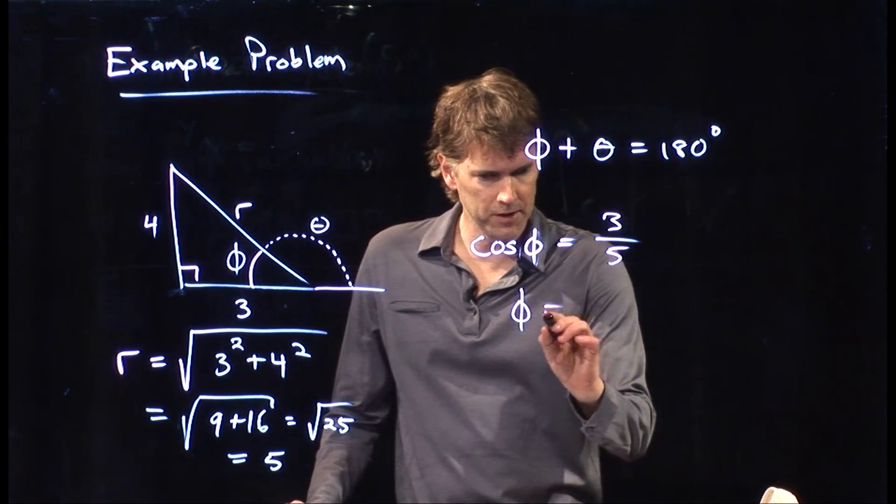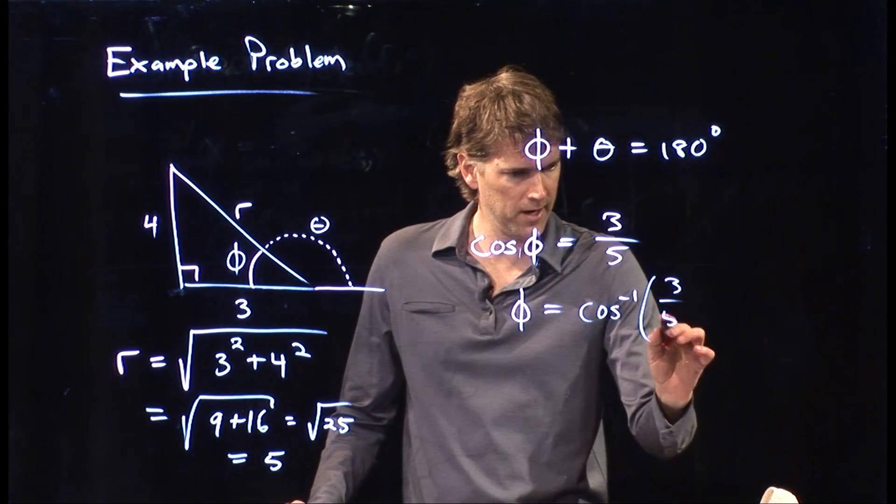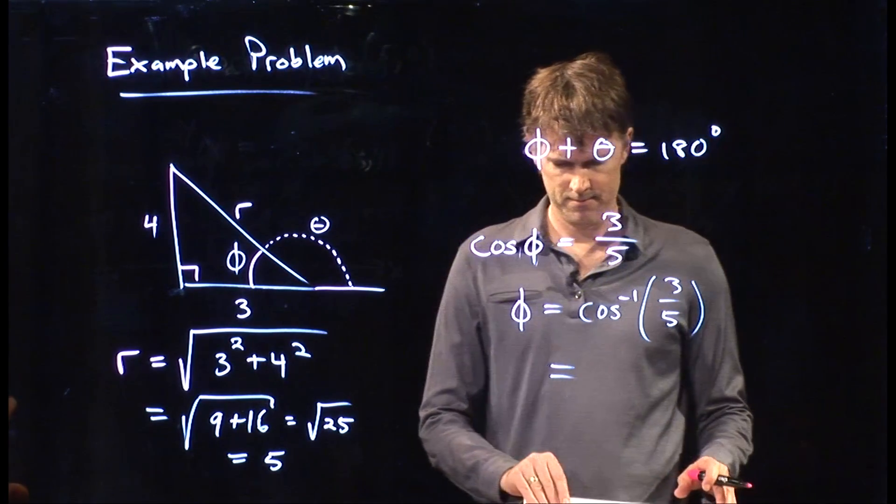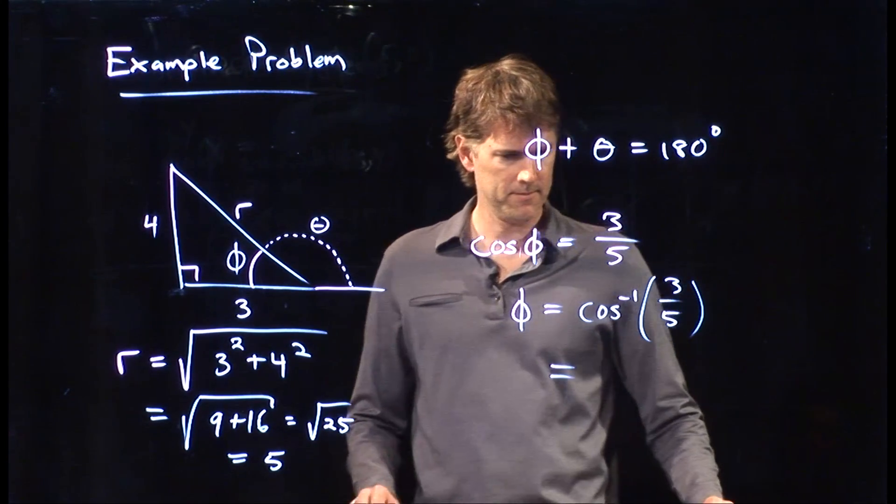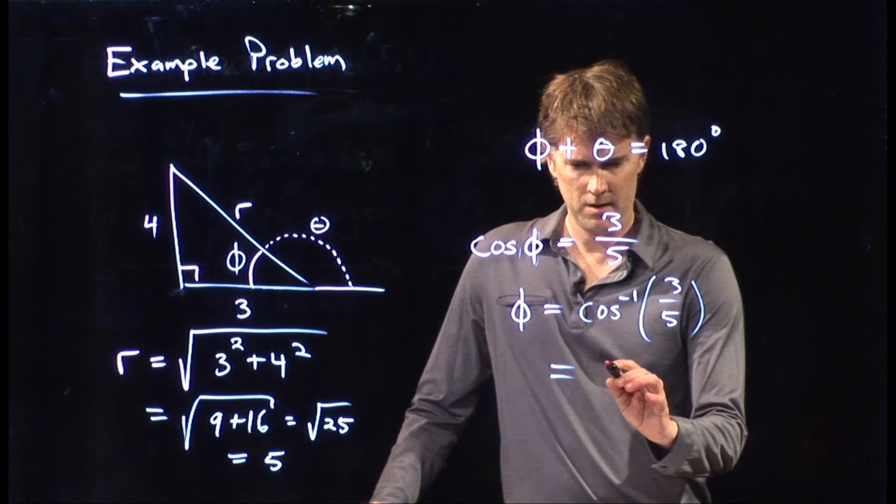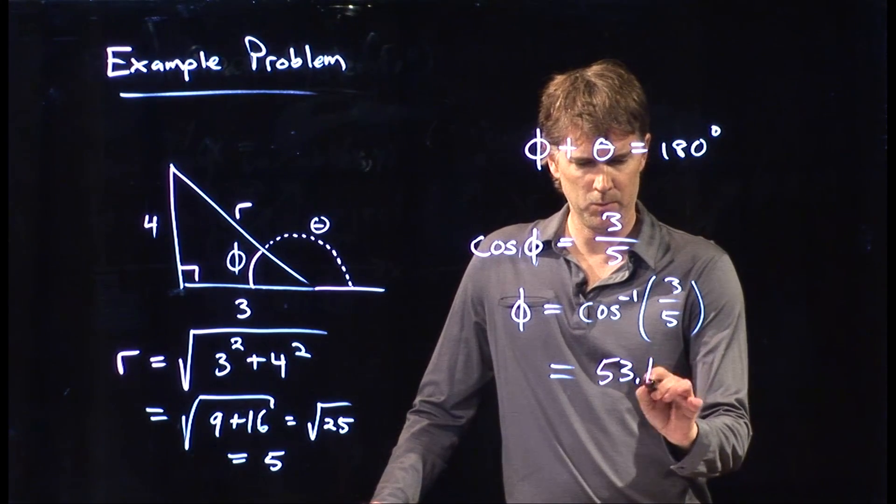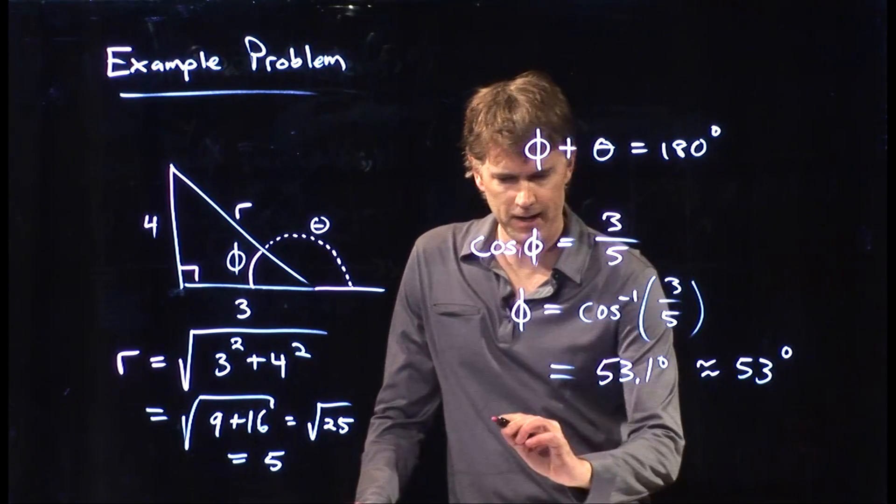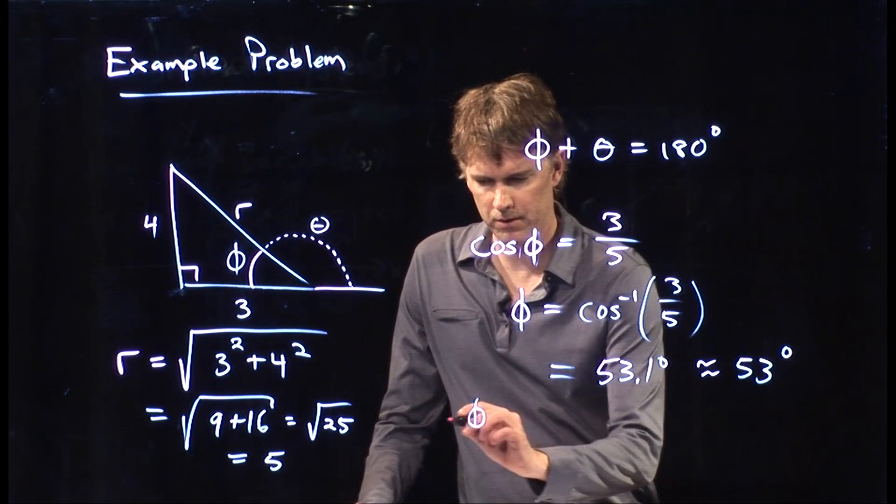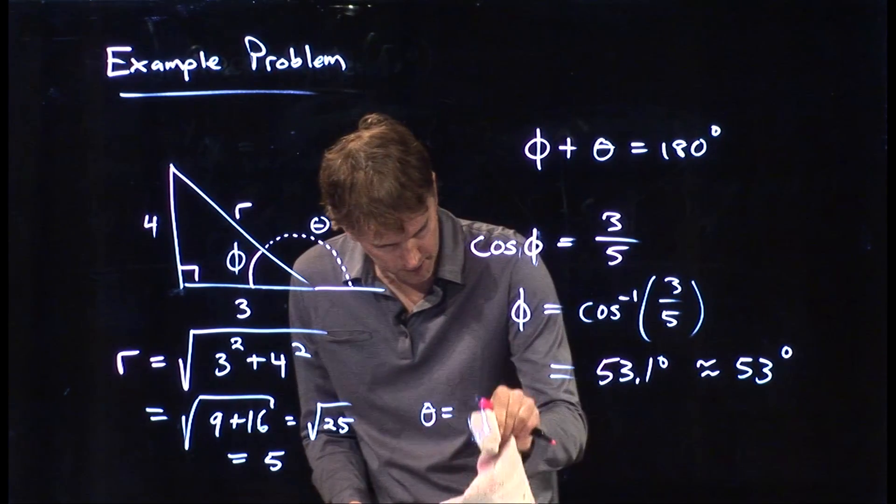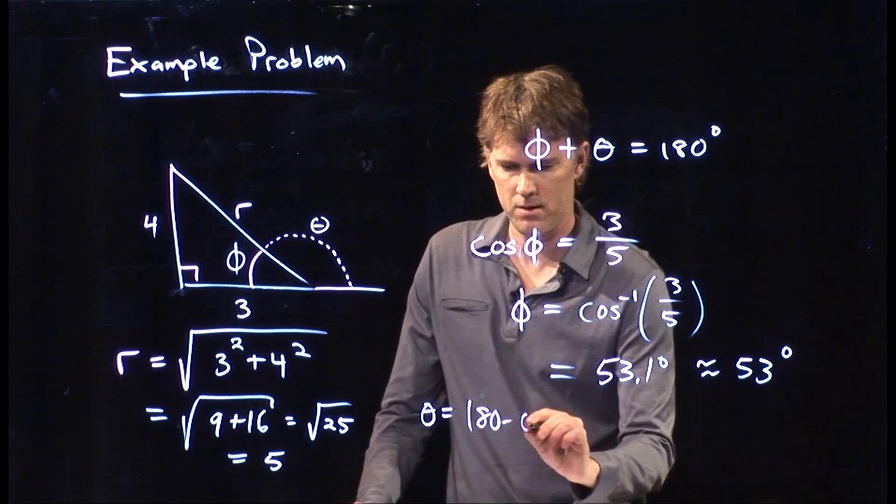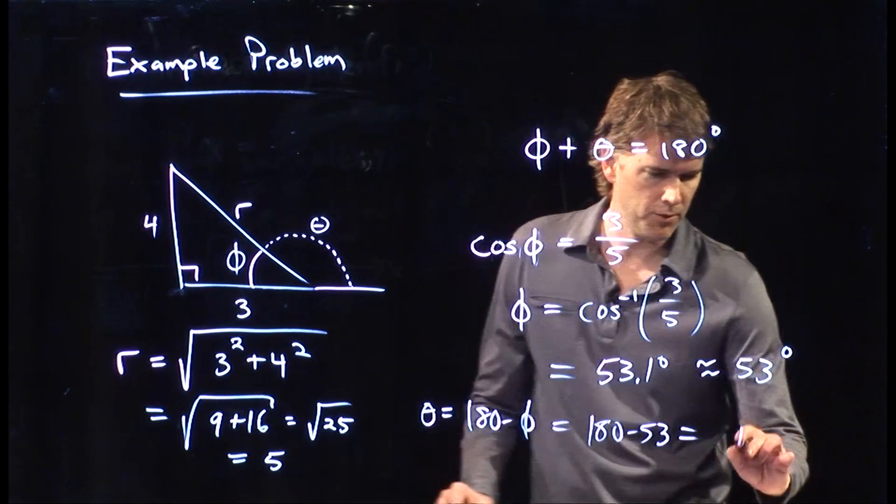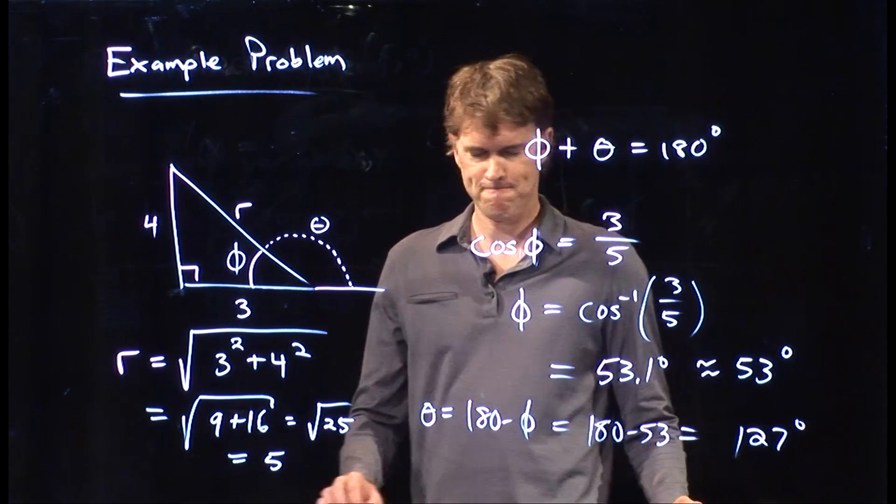All right. So you can plug this into your calculator. Take the arc cosine of 3 over 5. And what do you get? 53.1 degrees. All right. Let's just call that 53 degrees. And if that angle is 53 degrees, then what does theta have to be? Theta is, of course, 180 minus that phi. 180 minus phi is 180 minus 53. And we get 127 degrees.